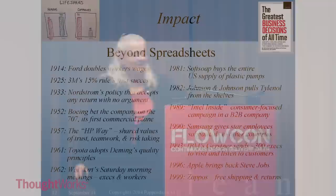Then there's the HP Way in 1957, which said: we have trust, we have teamwork, we have risk-taking — and that's what HP is all about. That lasted until some outside CEOs came in and changed it. And then Toyota adopted Deming's quality principles in 1961. Before that they didn't — they came into the American market in the 50s and failed miserably. Then they decided that wasn't going to get them there, and went wholeheartedly into Deming's principles.